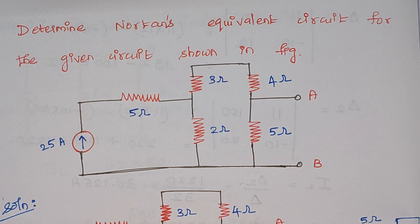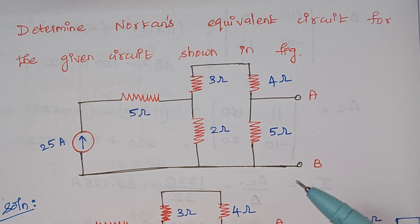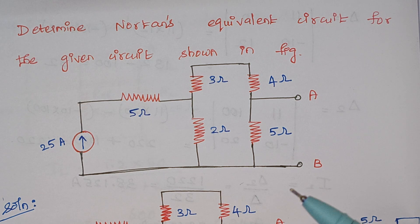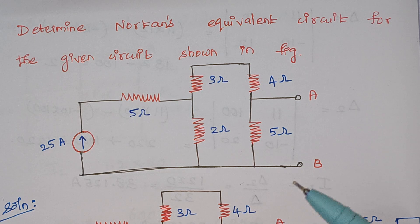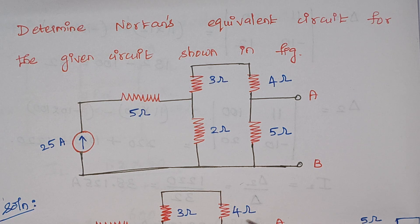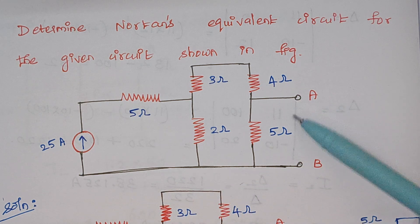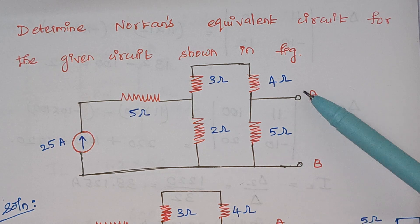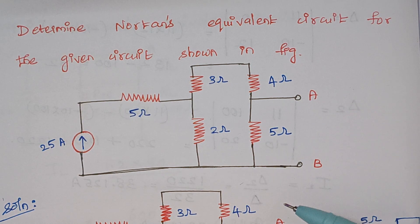How do we draw Norton's equivalent circuit? A Norton's equivalent circuit will always have a short circuit current. Parallel to the short circuit current we will have a R-Thevenin, and finally there will be some load resistance if it is given in the problem. But here in this case there is no resistor connected across these terminals. So we will start with the first step.